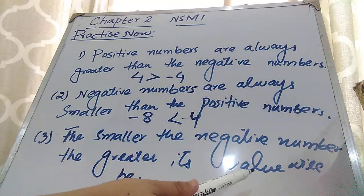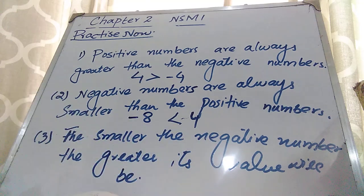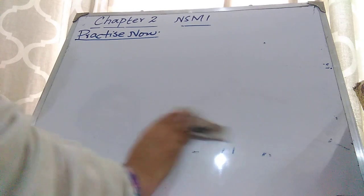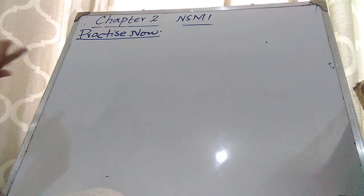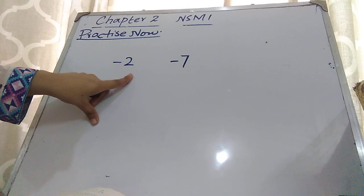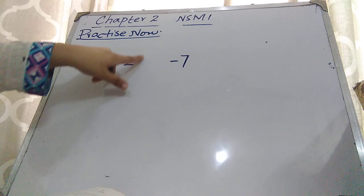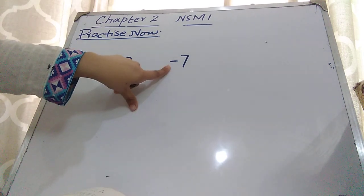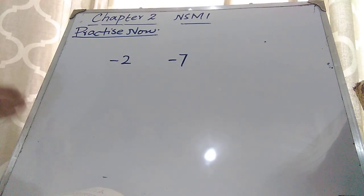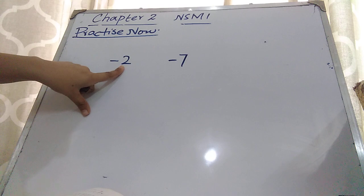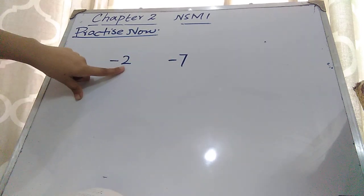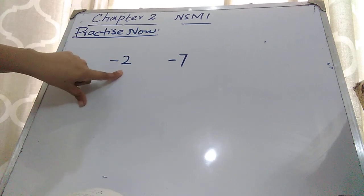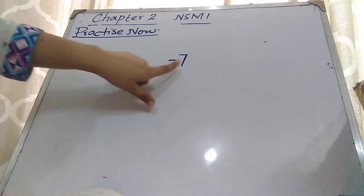Now for the last point: in negative numbers, the opposite case is followed compared to positive numbers. The smaller number becomes the bigger number and the bigger number becomes the smaller number. So in negative numbers, remember — opposite case will be followed: the smaller number will become the bigger number and the bigger number will become the smaller number.